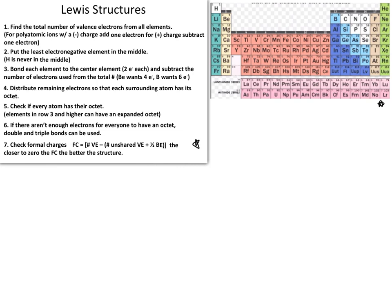Let's look at an example: CF4, or carbon tetrafluoride. We're going to figure out step number one, which is to find the total number of valence electrons from all of the elements.